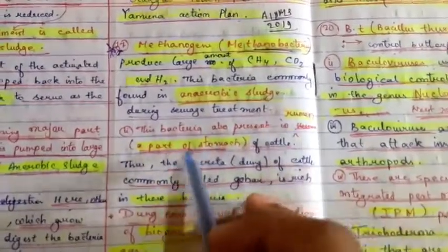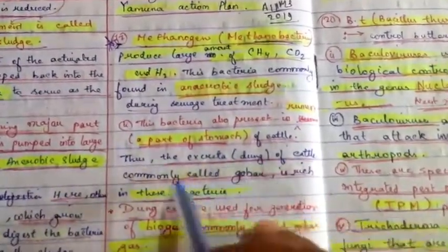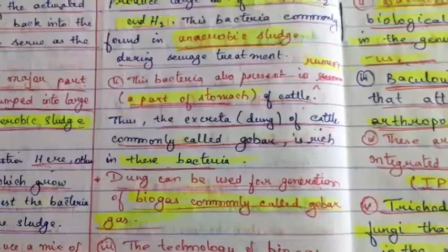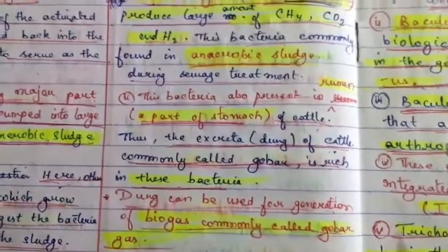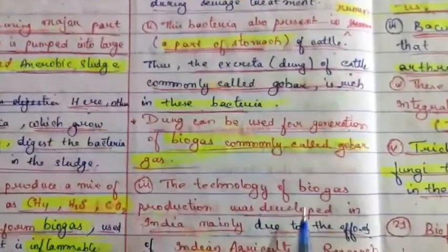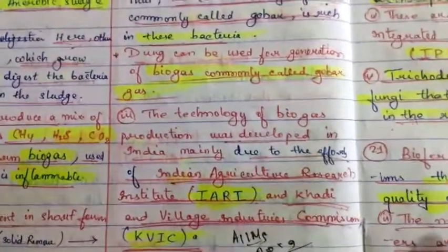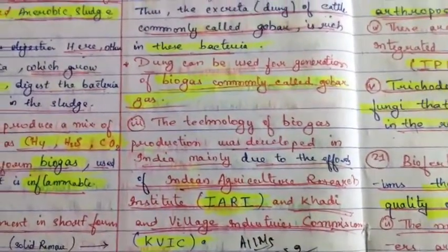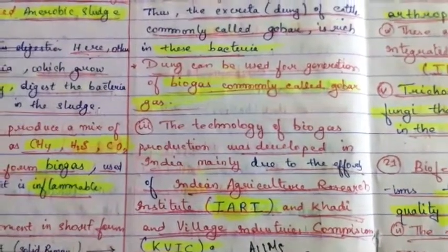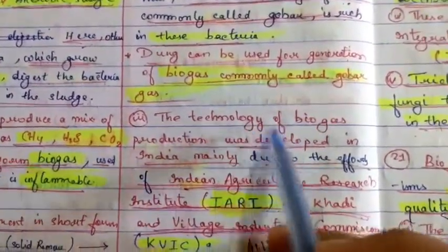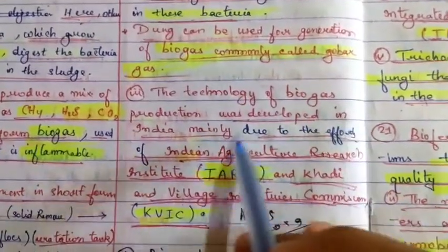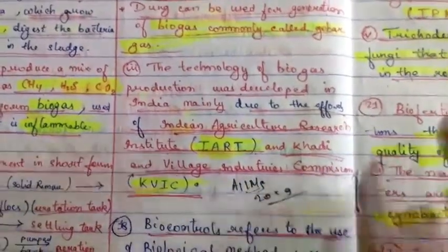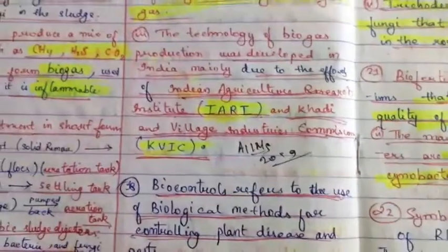These bacteria are also present in humans and in a part of the stomach of cattle. They are excreted in the dung of cattle, and cow dung is rich in these bacteria. The technology of biogas production was developed in India mainly due to the efforts of the Indian Agricultural Research Institute and the Khadi and Village Industries Commission.